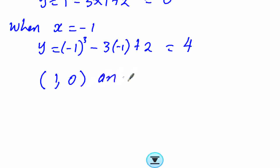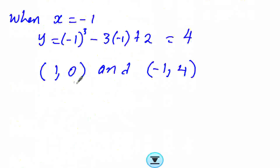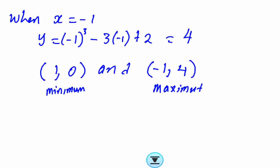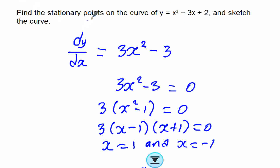So our turning points are (1, 0) and (negative 1, 4). From our sign table check, the point (1, 0) is a minimum and the point (negative 1, 4) is a maximum. We have now found the stationary points and determined their nature. The remaining part is sketching the curve.